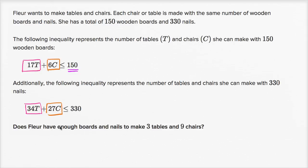Does Fleur have enough boards and nails to make three tables and nine chairs? Let's look at the number of boards. To make three tables and nine chairs, she's going to use 17 times T — in this case, three.